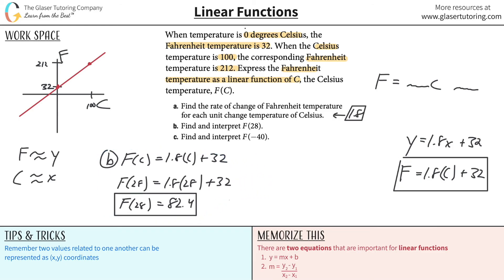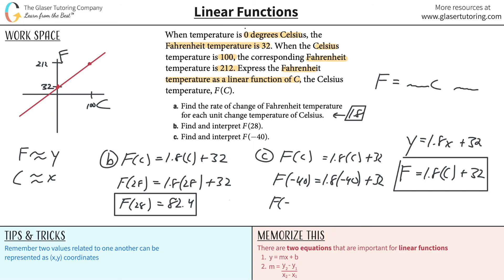It says find and interpret F of negative 40. F of C equals 1.8 times C plus 32, so F of negative 40 equals 1.8 times negative 40 plus 32. That equals negative 40. So negative 40 is the point at which the Fahrenheit temperature equals the Celsius temperature.